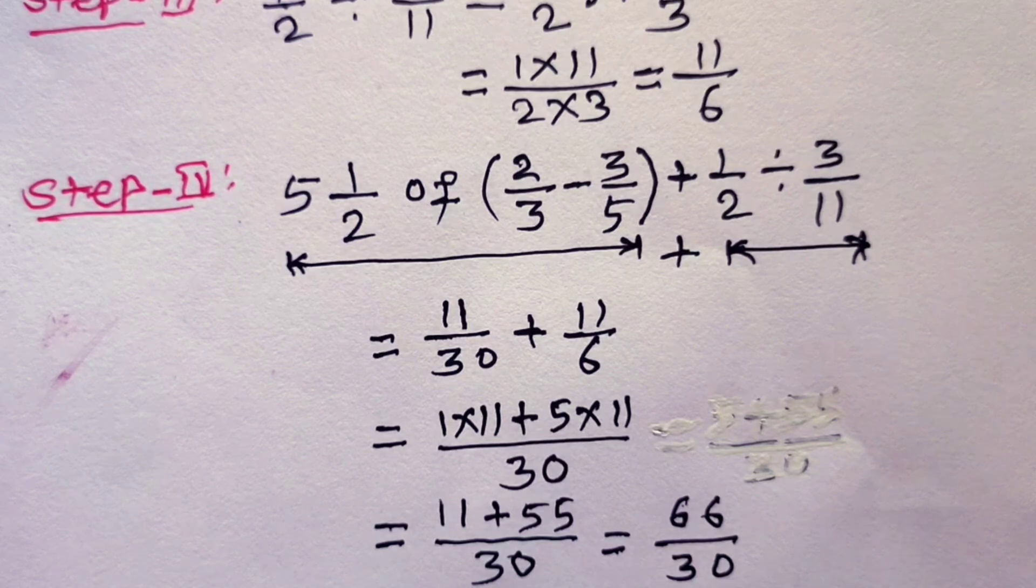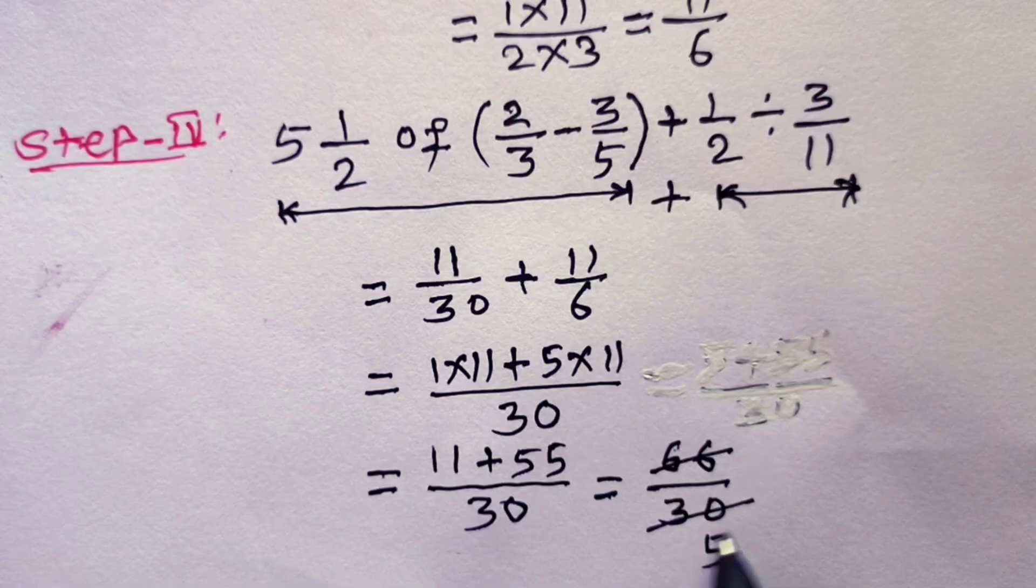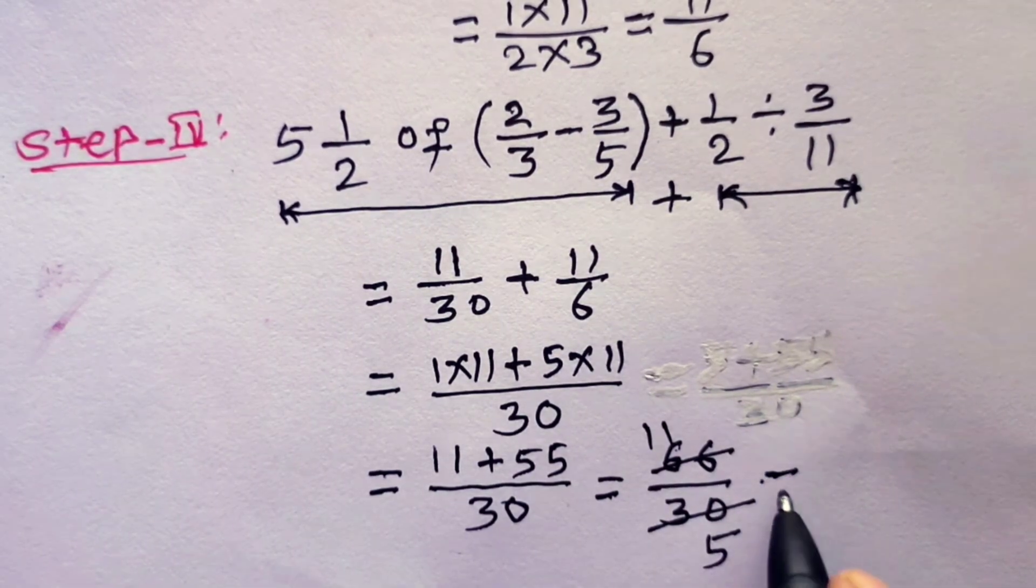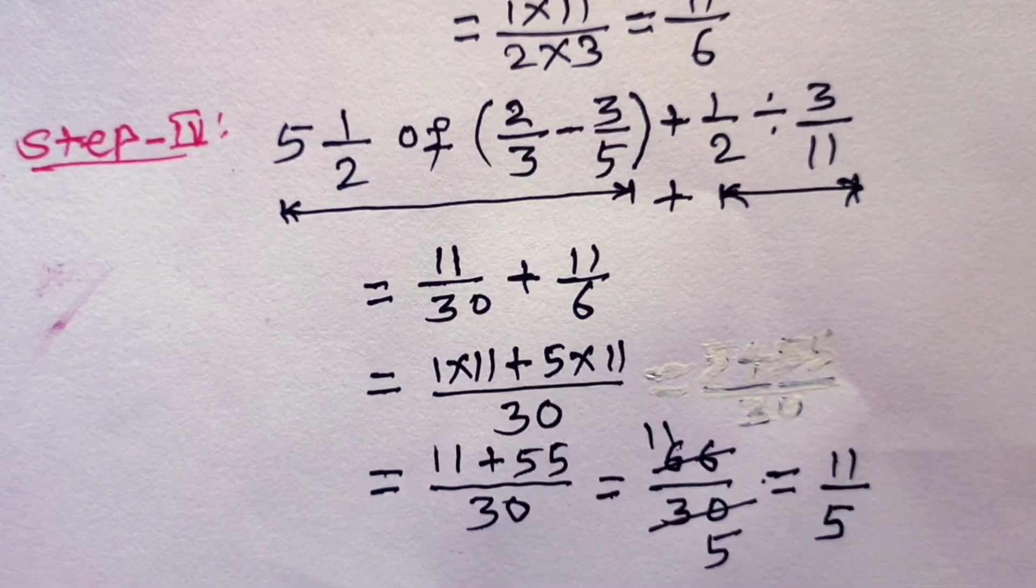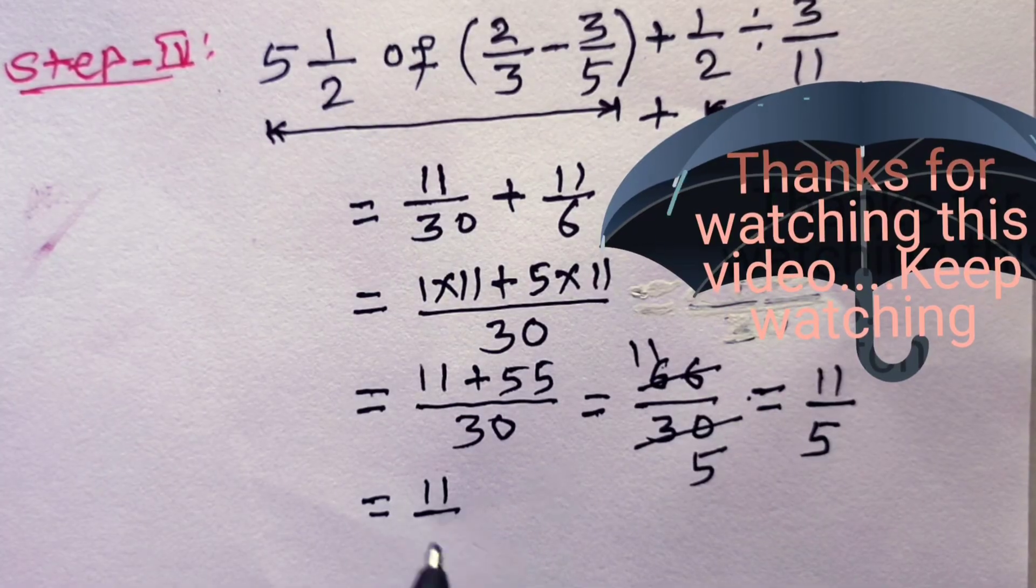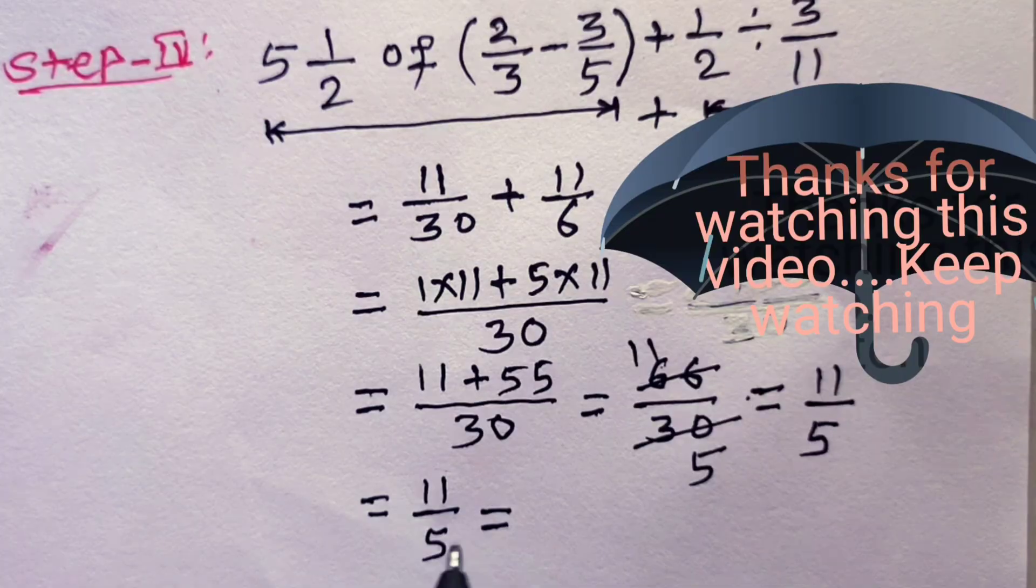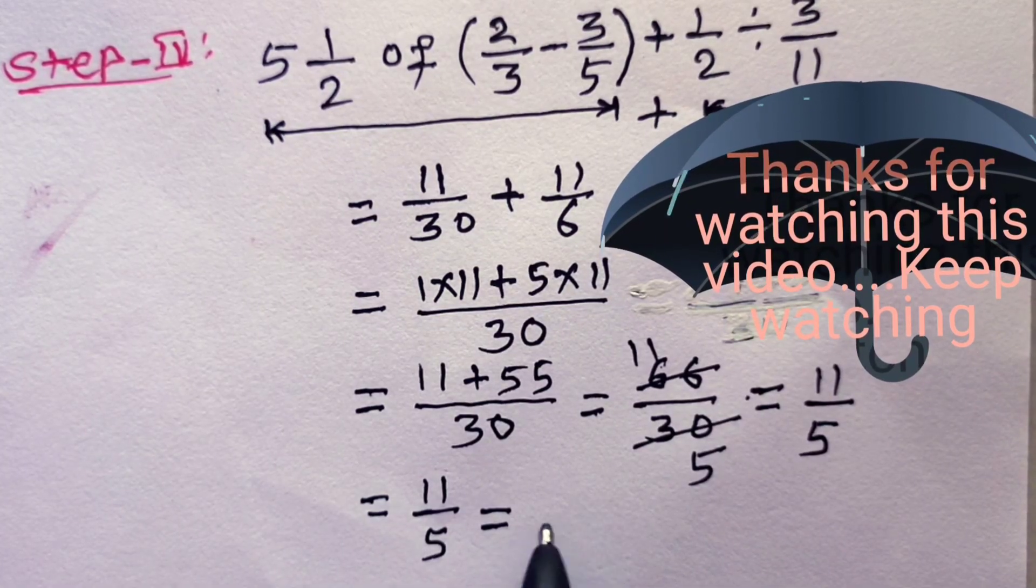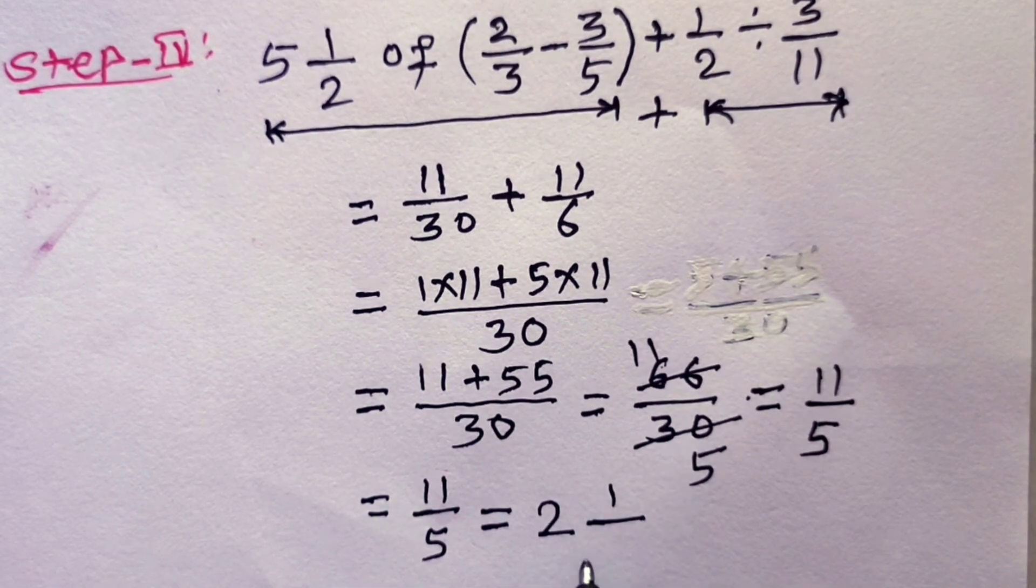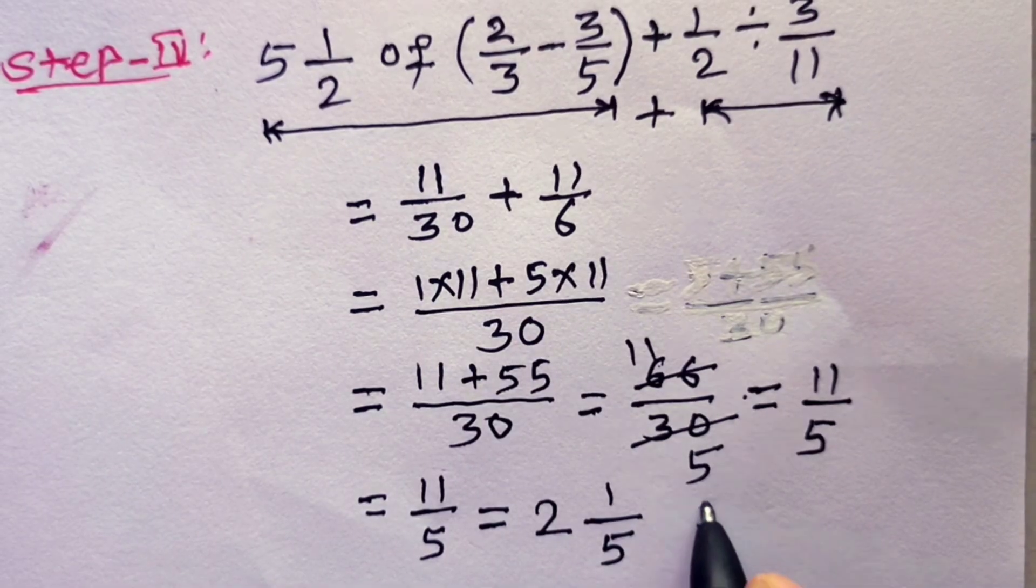Now divide numerator and denominator by 6. 6 goes into 30, 5, and 6 goes into 6, 1. Hence this is equal to 11/5. This improper fraction 11/5 we can express in mixed number, dividing 11 by 5. 5 into 10 plus 1, 10 plus 1 is 11, which is 2 and 1/5. And this is the answer.